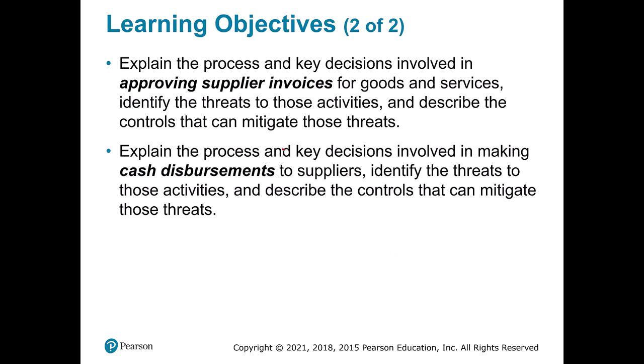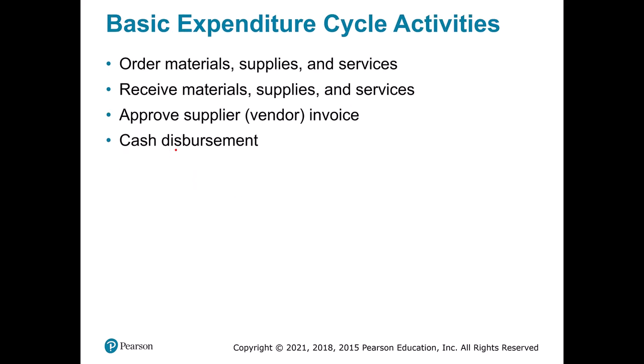We also have an approval process to talk about and then cash disbursement. When you look at the risks in organizations, cash is almost always at the top of the list — cash is very easy to steal compared to a lot of other things. So we have a lot of controls before we pass that along. We can break this process down into four major sections: the ordering process, the receiving process, the approval process, and cash disbursement. These are the four basic things we do in the expenditure cycle.